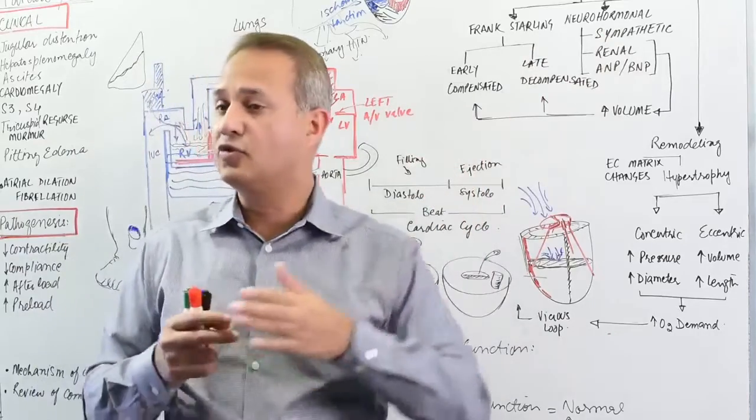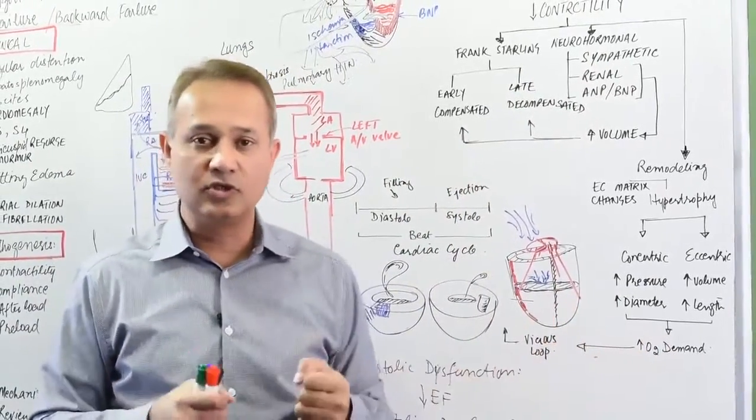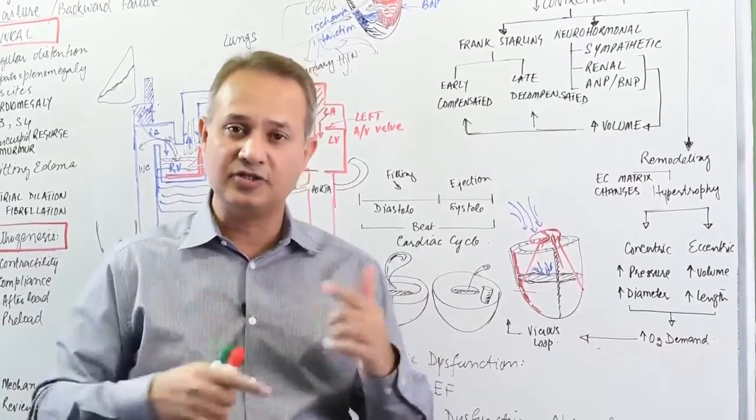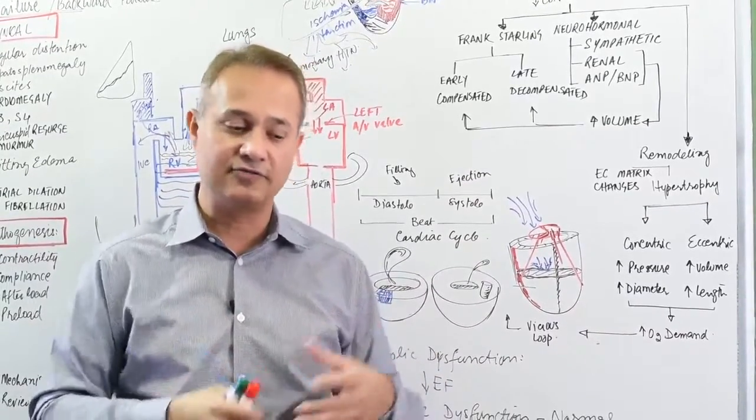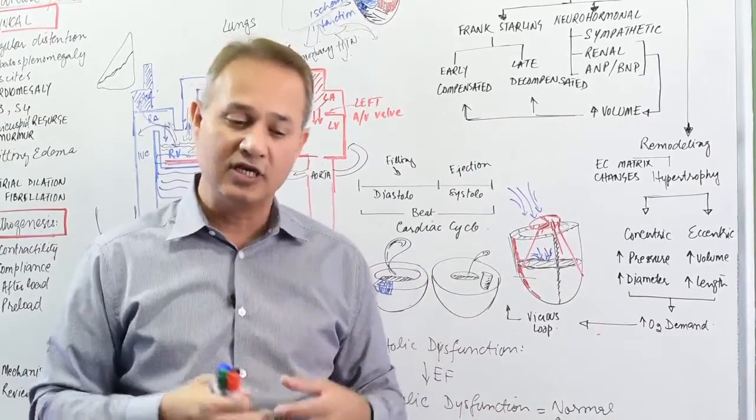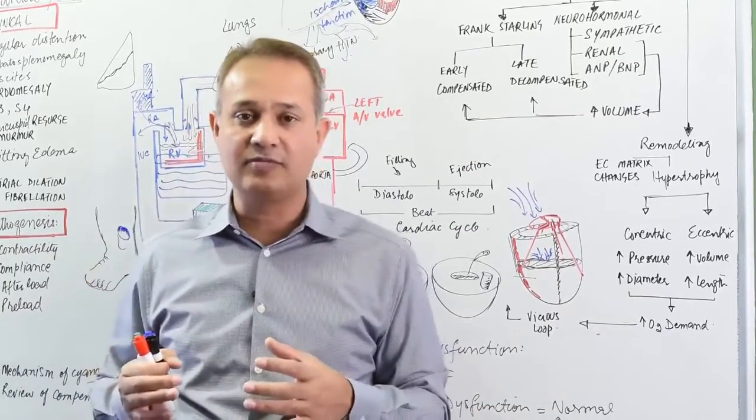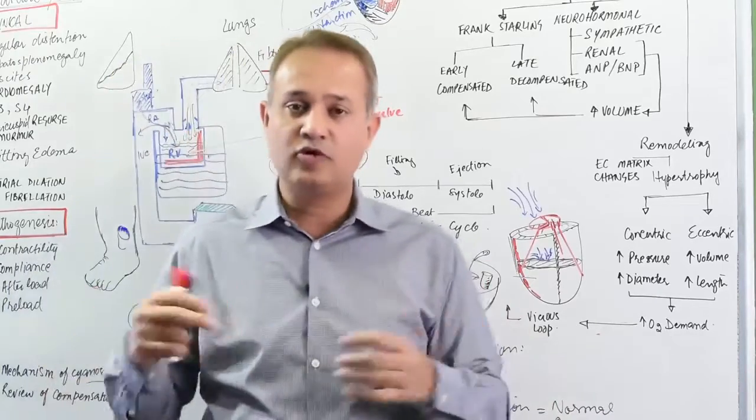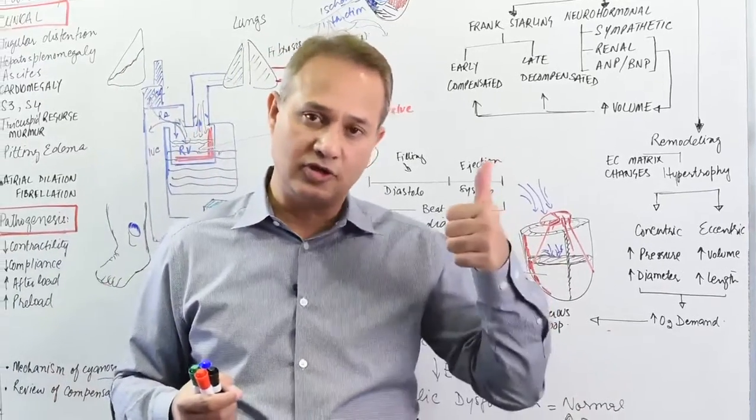The renal system is a more long-term solution. As perfusion to the kidney reduces, the renin-angiotensin system becomes active and retains more fluids. This is initially good but later becomes bad. Why is it good initially? There's more venous return, so more cardiac output.